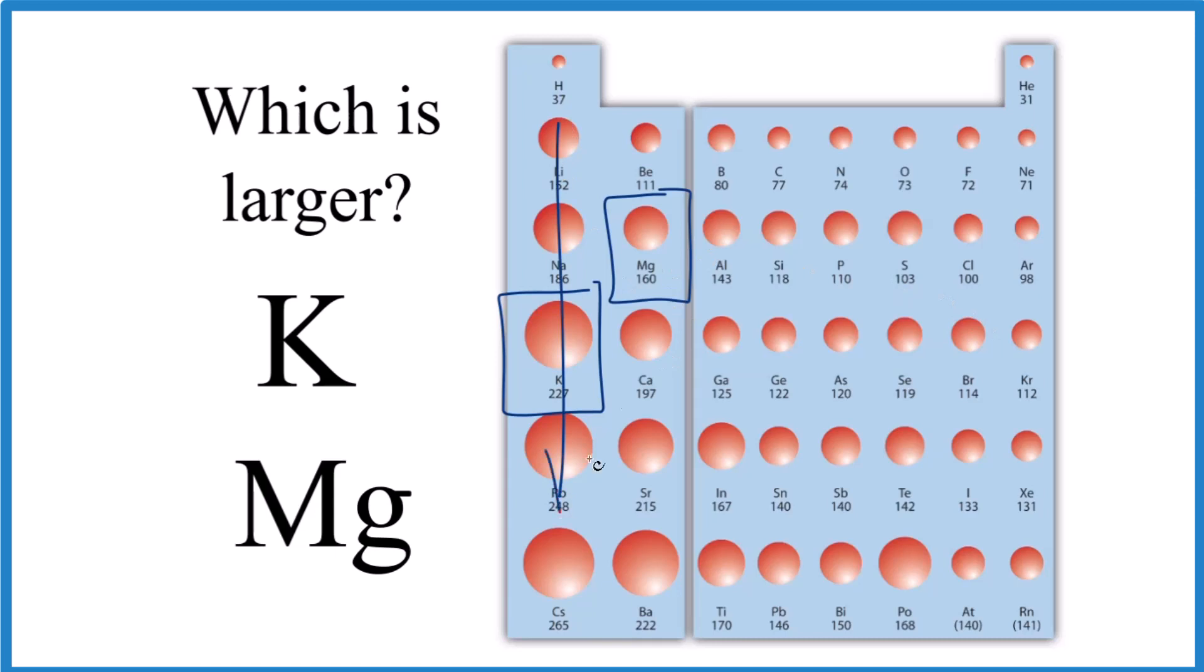As you go down, a group gets bigger. Then as you go across a period, it gets smaller. So really, cesium right here, that's the largest one on the periodic table. It has the largest atomic radius.